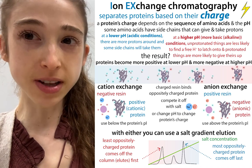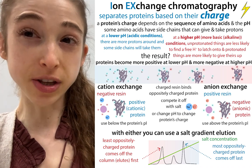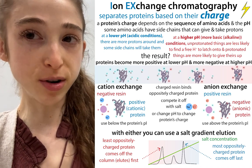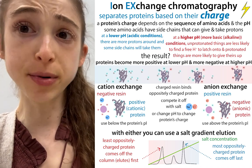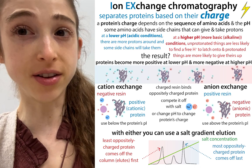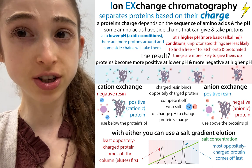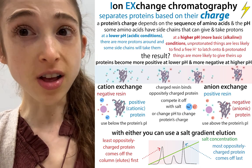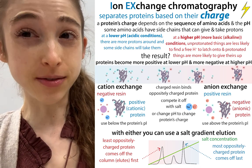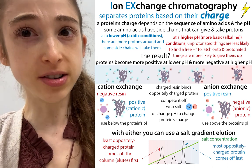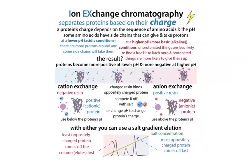Ion exchange chromatography is one of the main methods we use to purify proteins, and it separates proteins based on their charge. The terminology can get kind of confusing, so here's an overview. There are two main forms of ion exchange chromatography: cation exchange and anion exchange.